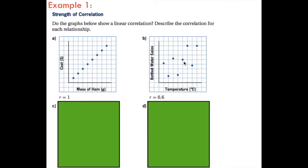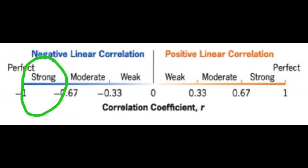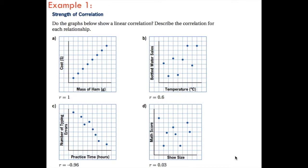Number of typing errors versus practice time - there's definitely a pattern here. You can see as practice time increases, the number of typing errors decreases. Since we have a negative correlation coefficient between negative 0.67 and negative one, you would say it's a strong negative linear correlation.